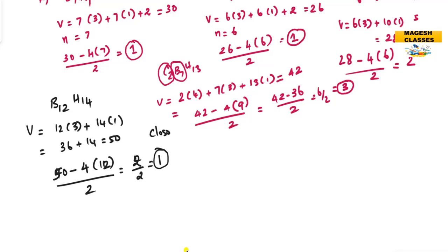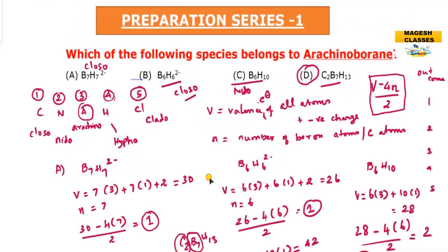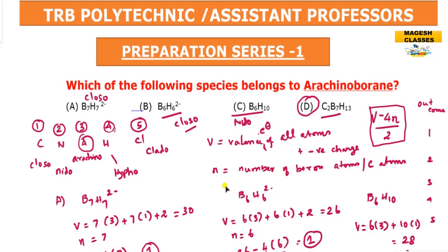So for boranes and carboranes, we can determine the structure type using this expression. Valence electrons are calculated by counting electrons from all atoms and adding any negative charge. We use this expression to get output values that relate to borane types. This is the basic method for these types of problems.